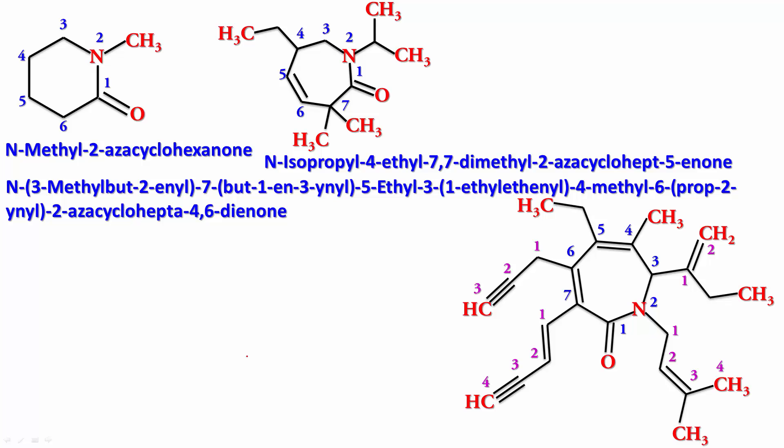All right, so what happens when the ring is not having the amide on it? Rather, the amide is attached outside the ring. Well, if the amide is attached outside the ring, let's say something like this. If this were an acid, we would have called it cyclohexanecarboxylic acid. This is going to be cyclohexanecarboxamide.